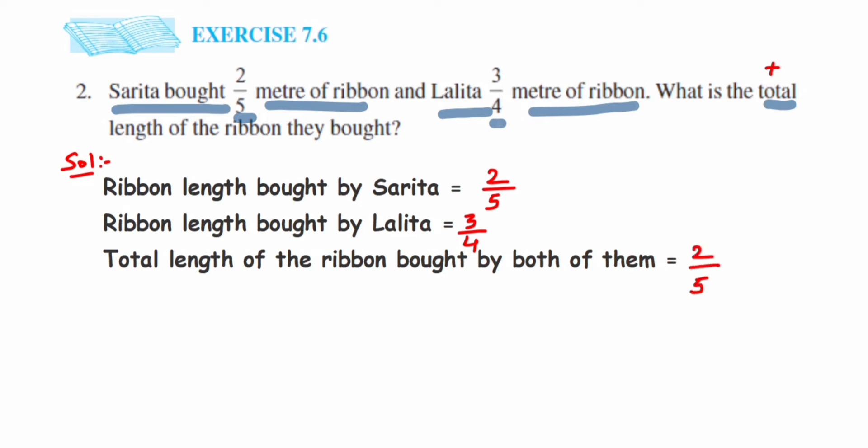Since they are unlike fractions because the denominators are different, we have to make them the same by taking LCM. First, we'll take the LCM of 5 and 4, which is 20. Now we have to change the denominator by finding the equivalent fraction.